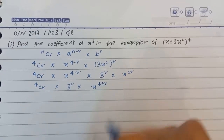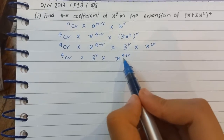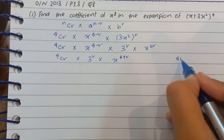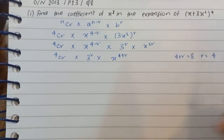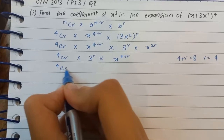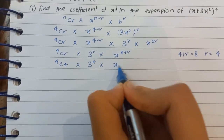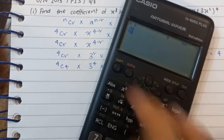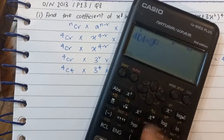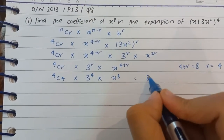...4 minus r plus 2r, which simplifies to 4 plus r. Since we need the power of x to equal 8, we set 4 plus r equal to 8, so r equals 4. This gives us 4C4 into 3 raised to the power 4, into x raised to the power 8. Since 4C4 is 1 and 3 to the power 4 is 81, our answer is 81x raised to the power 8.